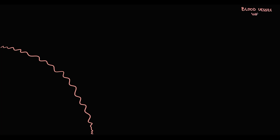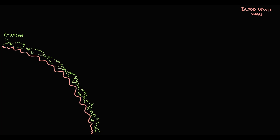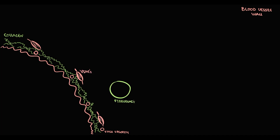To understand this vasculitis, we need to know its pathogenesis. In the blood vessel wall we have a lining of endothelial cells, and beneath the endothelium is a subendothelial extracellular matrix composed mostly of collagen. Large arteries also have vasa vasorum that provide nutrient delivery to the blood vessel wall. Arteries have smooth muscle cells that provide contractility, and production of collagen is provided by specific cells called fibroblasts.